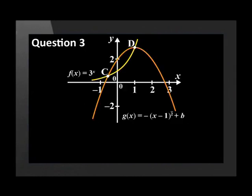Sketched are the graphs of f(x) is equal to 3 to the power x and g(x) is equal to negative (x minus 1) squared plus b where b is a constant. The graphs of f and g intersect at c. d is the turning point of g.